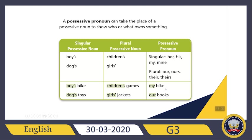My bike — this bike belongs to me, so it's 'my'. Our books — these books belong to us, so I need to put 'our books'. But for example, it's a girl's jacket — instead of 'girl's', I can say 'their jackets'. If I say 'their', it's a possessive pronoun.